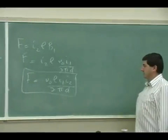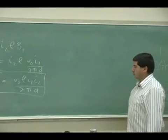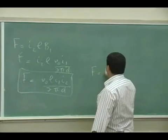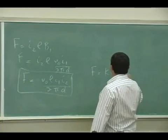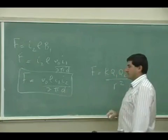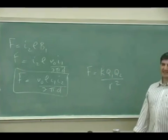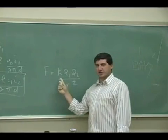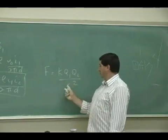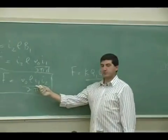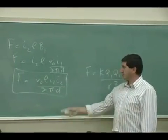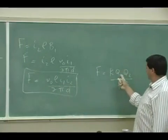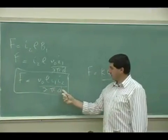That's it: μ₀LI₁I₂/(2πd). So it kind of resembles this equation. It doesn't really look like it, but it's the equivalent. The force between two point charges, q₁q₂/r², this is the force between two current carrying wires: μ₀L their length, I₁I₂, so this is like the q₁q₂, and then 2πd.